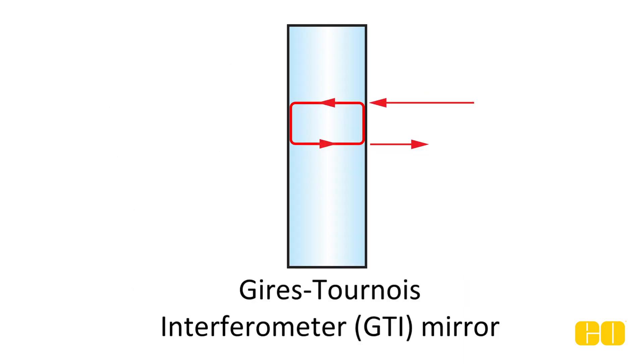Gires-Tournois interferometer mirrors achieve angle-dependent negative group delay dispersion based on resonant cavity structures. However, this technology is only usable for a very narrow bandwidth and introduces third- and higher-order dispersion.